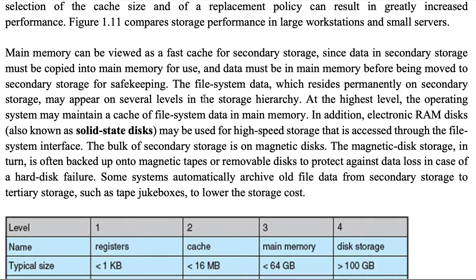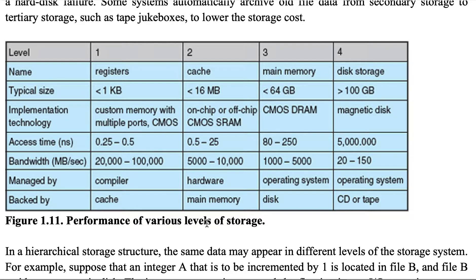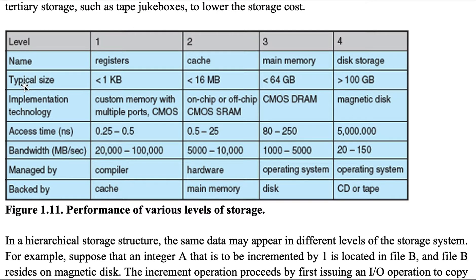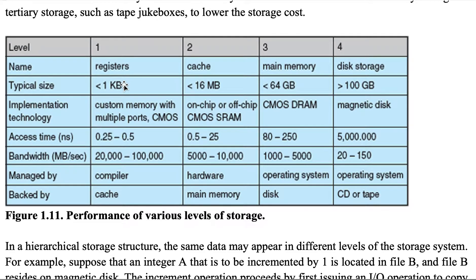Looking at the performance of different levels of storage: we have disk storage, which is the slowest. Then we have main memory, which is random access memory — this is faster because it is based on flash memory technology. Then we have cache, which is faster than main memory but more expensive. And then we have registers, which are very fast and closer to the CPU, the central processing unit — but their typical size is much, much smaller.